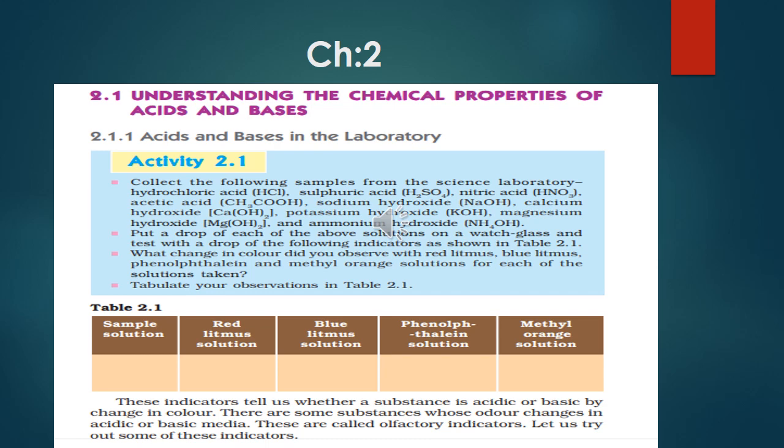Then you check what change in color did you observe with red litmus paper, blue litmus paper, phenolphthalein, and methyl orange solution for each of the solutions taken. Tabulate your observation in table 2.1.